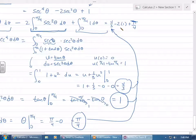So 4 thirds minus 2, that's 4 thirds minus 6 thirds, so that's minus 2 thirds plus pi over 4.